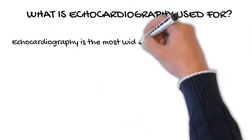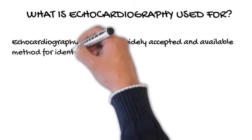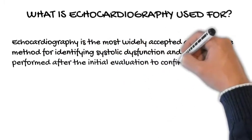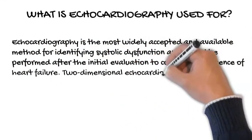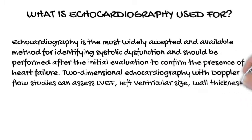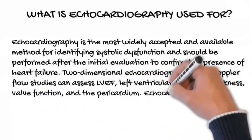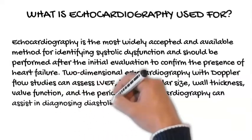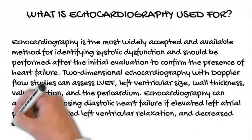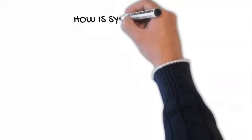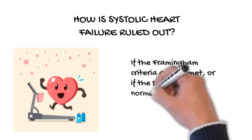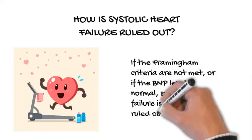What is echocardiography used for? Echocardiography is the most widely accepted and available method for identifying systolic dysfunction and should be performed after the initial evaluation to confirm the presence of heart failure. Two-dimensional echocardiography with Doppler flow studies can assess LVEF, left ventricular size, wall thickness, valve function, and the pericardium. Echocardiography can assist in diagnosing diastolic heart failure if elevated left atrial pressure, impaired left ventricular relaxation, and decreased compliance are present. How is systolic heart failure ruled out? If the Framingham criteria are not met or if the BNP level is normal, systolic heart failure is essentially ruled out.